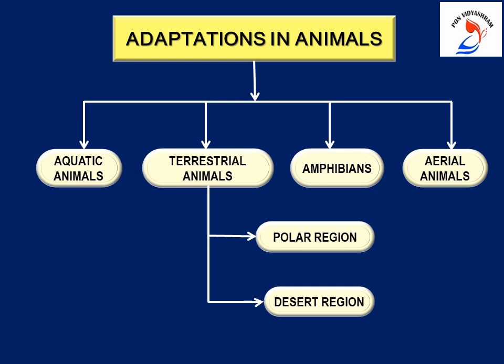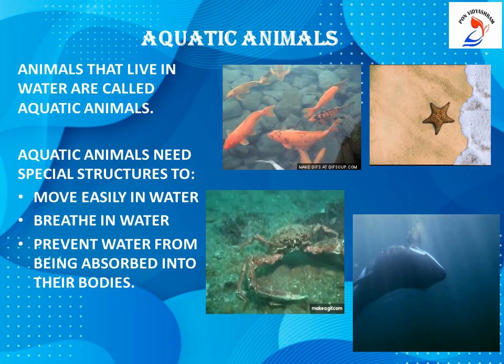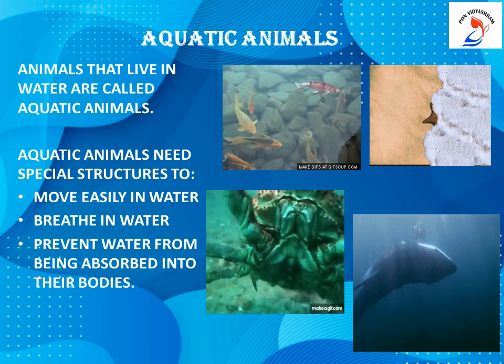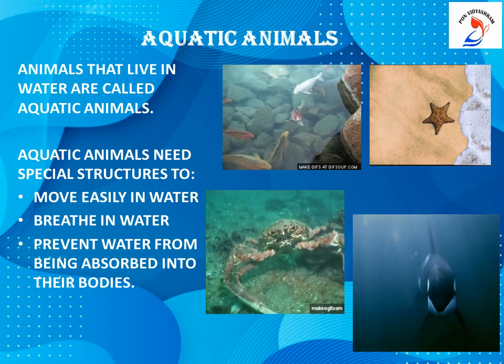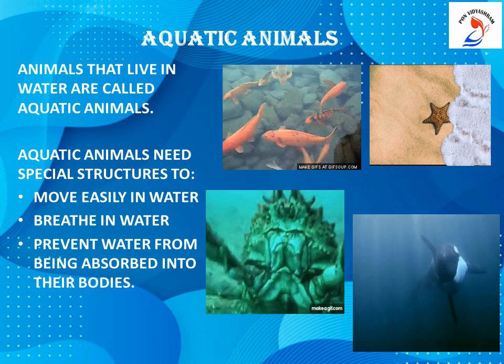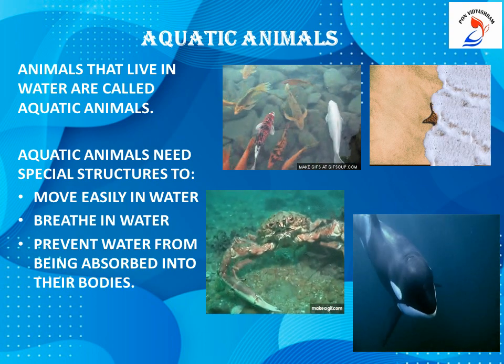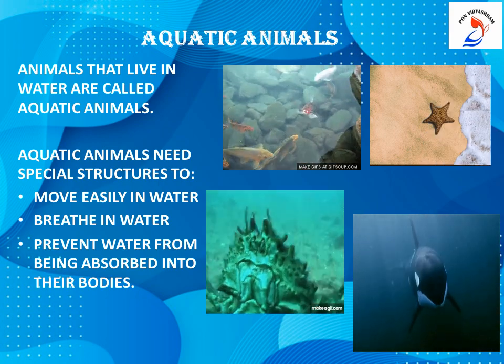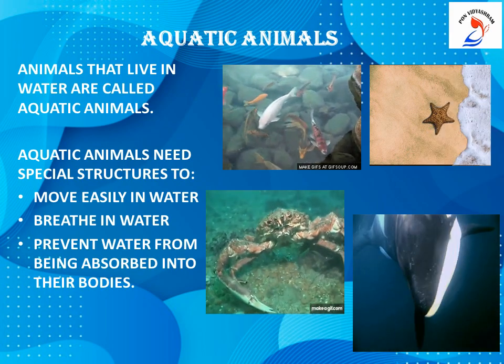Depending on their environment, animals can be classified into aquatic animals, terrestrial animals, amphibians, and aerial animals. The first type we are going to learn about is aquatic animals. You have learnt about aquatic animals in your previous classes. These are animals that live in water. They have special structures to move easily in water, to breathe in water, and to prevent water from being absorbed into their bodies.